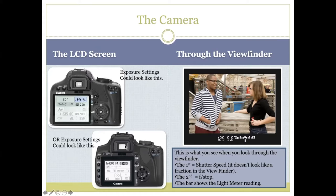The LCD screen could look different depending on which camera you have. That's the hard part about an online photography course — half of you will have Canons, another portion will have Nikons, and there will be a couple with an Olympus, Sony, or maybe a mirrorless camera. Your buttons are all in different places, so it's really important to familiarize yourself with your manual.